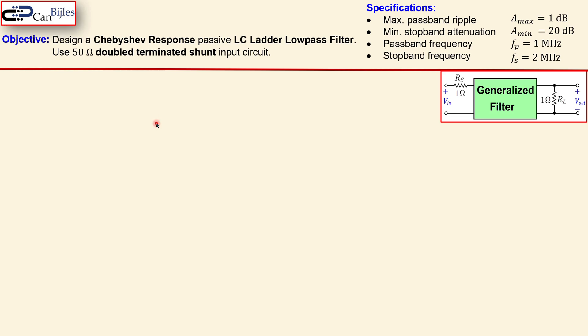So let's see what we can do in this example. We like to design a Chebyshev response passive LC ladder low-pass filter and must be again 50 ohm double terminated shunt input circuit. Specifications are shown here. This is the maximum passband ripple. It is 1 dB. That's also the ripple in the passband in this case for a Chebyshev. And we need to have a minimum stopband attenuation of 20 dB. The passband frequency must be 1 MHz and the stopband frequency is 2 MHz.